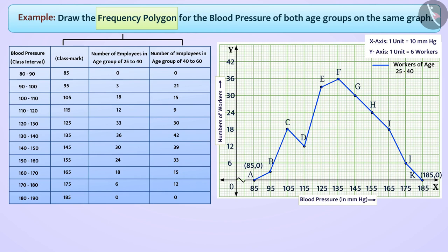In this way, different points to denote the number of employees between the ages of 40 and 60 respectively will be as follows. We will connect all the points with dotted line segments, which gives us the frequency polygon A, P, Q, R, S, T, U, V, W, X, K, which will denote the number of employees aged 40 to 60 and their blood pressure. To show that a polygon made with dotted line segments represents the number of employees between 40 and 60 years of age, we would write the sign as follows.